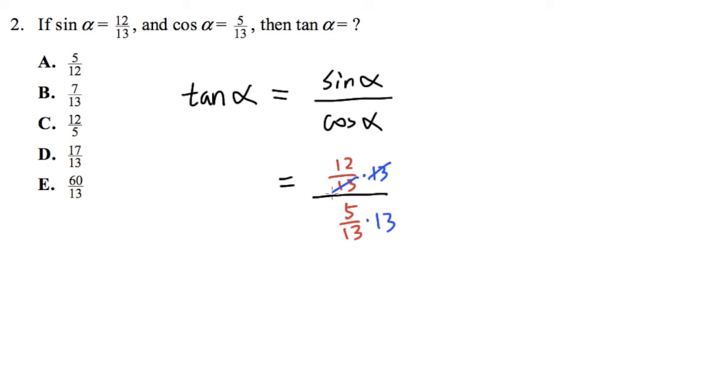So that this and that will cancel, and this and that will cancel. At the end, the answer is just 12 on the top over 5 on the bottom.